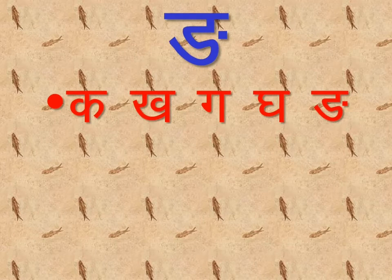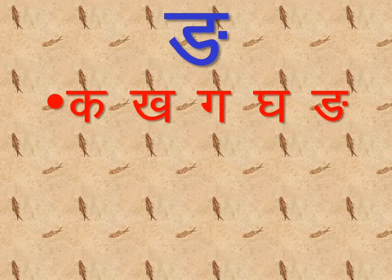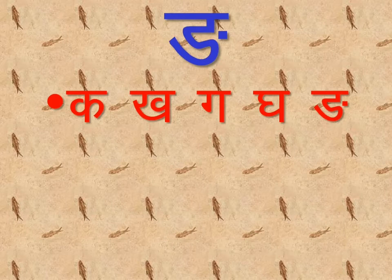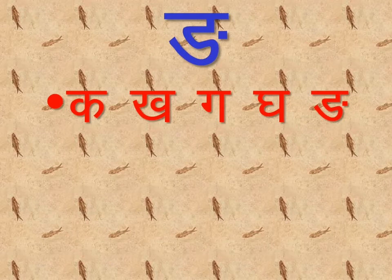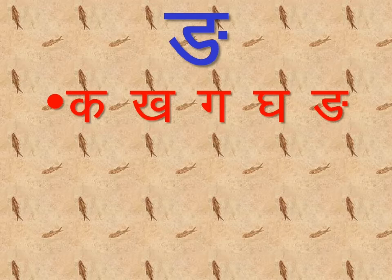So — Ghur, Khur, Ghur, Ghur, Ang. The first set of letters we have completed. And what are they? Ghur, Khur, Ghur, Ghur, Ang.